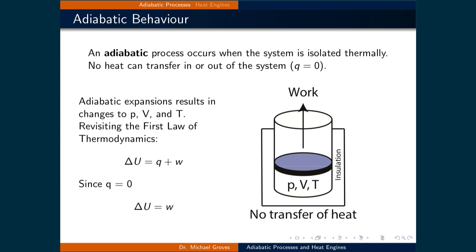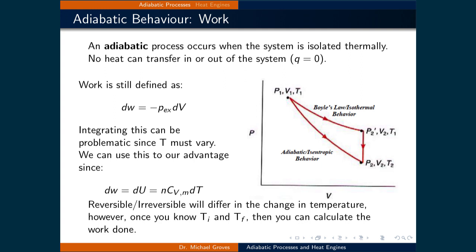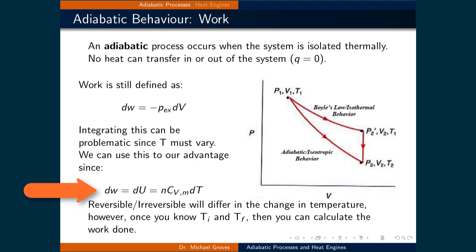Keep in mind that adiabatic expansions result in changes to the pressure, volume, and temperature. Now that we have determined this direct relationship between work and the change in internal energy, let us quantify the work done by an adiabatic process. Recall that work is defined as the negative of the external pressure times the change in volume. This can be difficult to integrate because the temperature changes in adiabatic processes. However, we can use this to our advantage since work is equivalent to the change in internal energy. Changes in internal energy can be quantified by integrating the heat capacity of a substance at constant volume by small changes in temperature. This means that once the initial and final temperatures are known, this integral can be performed and the amount of work will be determined.